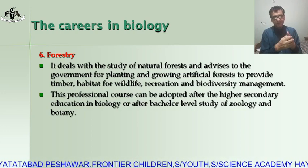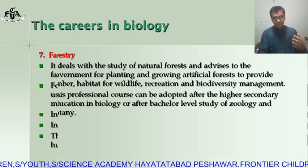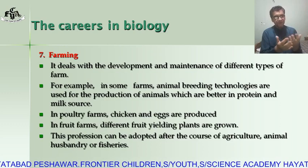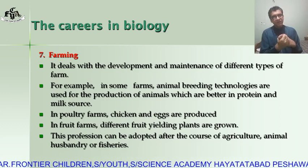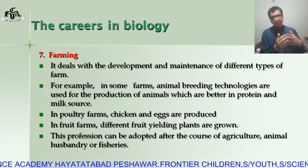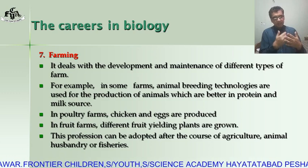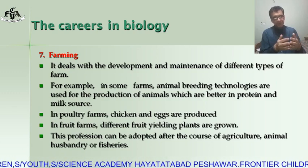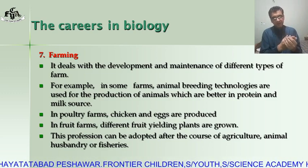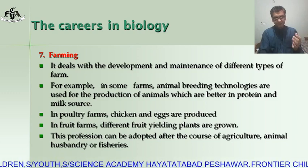You can also adopt the forestry field after a BS degree in zoology or botany. The next profession is farming. Farming deals with the development and maintenance of different types of farms. For example, in some farms, animal breeding technology is used for the production of animals which are better in protein and milk. In poultry farms, chickens and eggs are produced. In fruit farms, different fruit-yielding plants are grown. This profession can be adopted after the completion of a course in agriculture, animal husbandry, or fisheries.